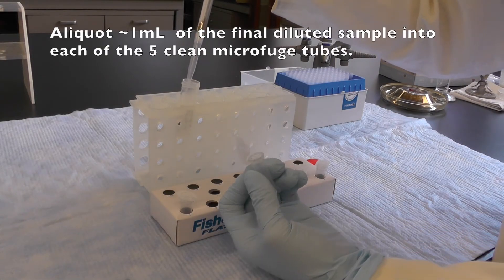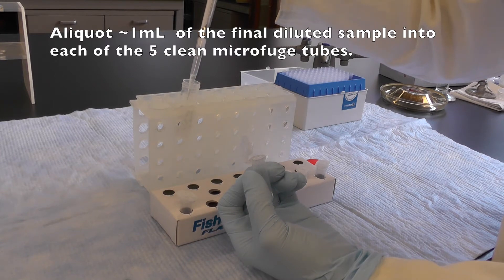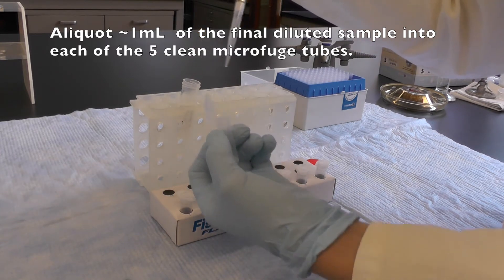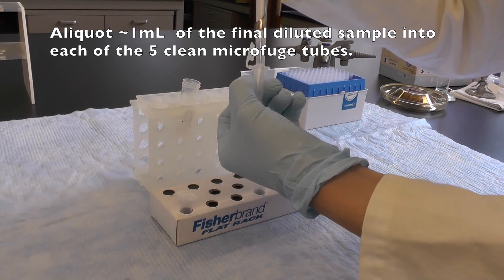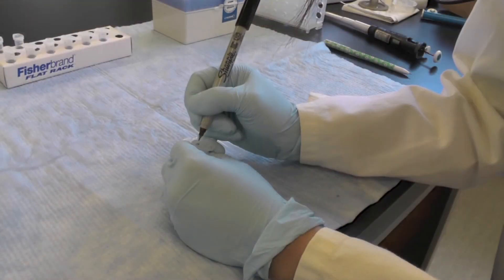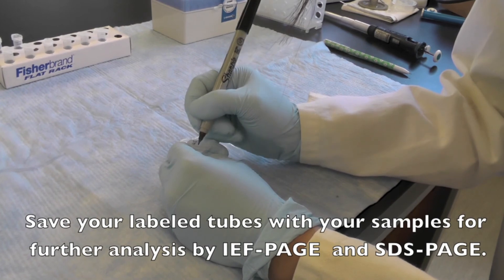Then, aliquot approximately 1 mL into 5 microfuge tubes. Label with your group number, fish species, and concentration. These will be used for both IEF and SDS page.